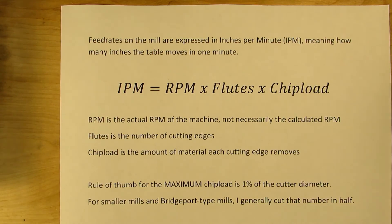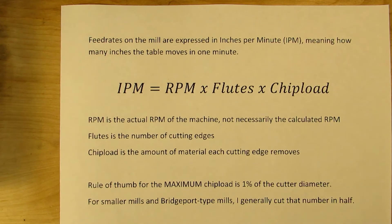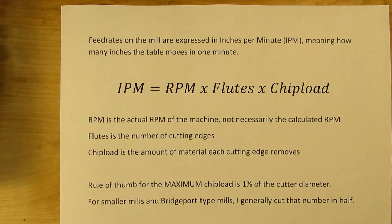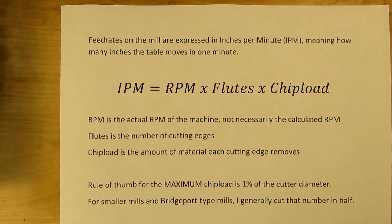On manual machines, you're never going to be able to input the exact calculated RPM unless it happens to coincide with one available on your machine. On a CNC machine, of course, you can program the exact RPM of the spindle, so you can use the calculated RPM.